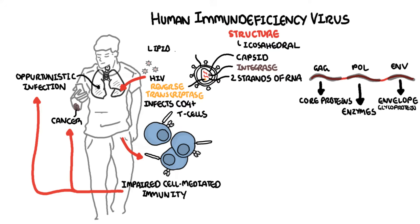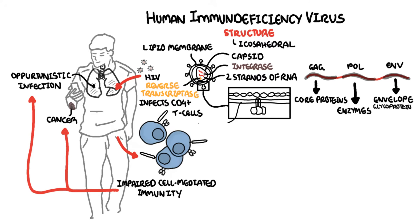The outer shell of the virus is called the envelope and is made up of lipid layers, which are covered in spikes of glycoproteins. Here you can see glycoproteins GP41 and GP120. These glycoproteins allow the HIV to lock onto the CD4 receptors on the CD4 T cells and enter the cell.